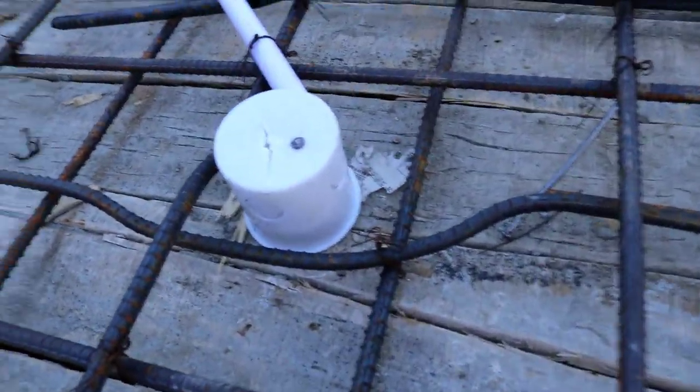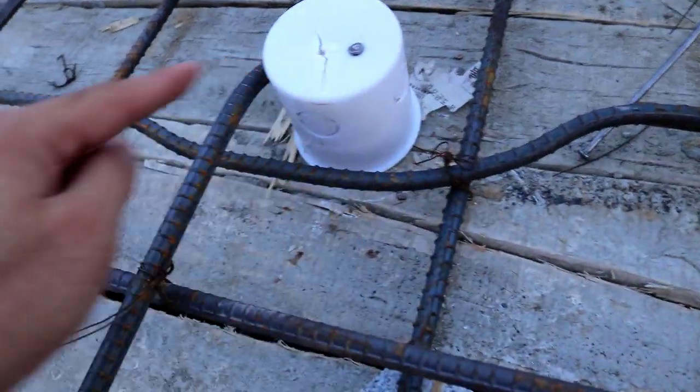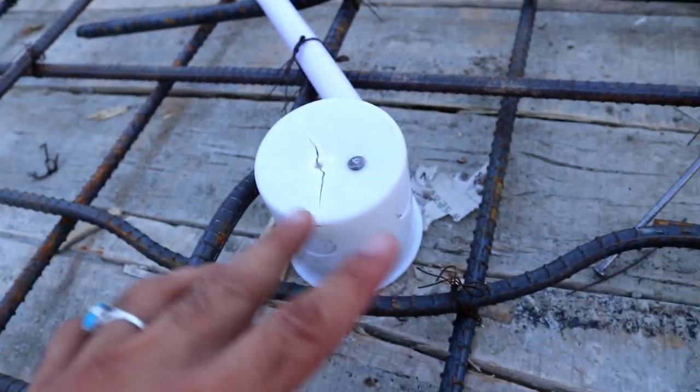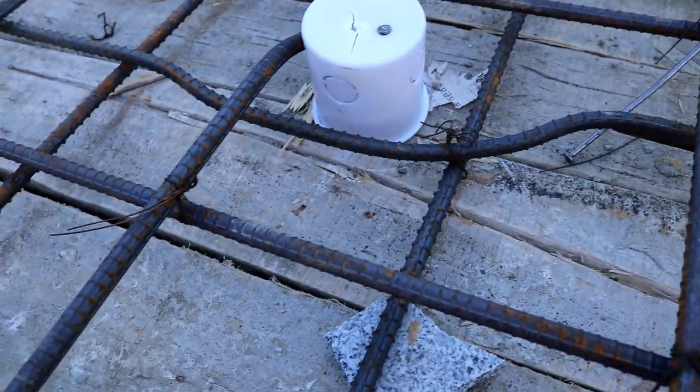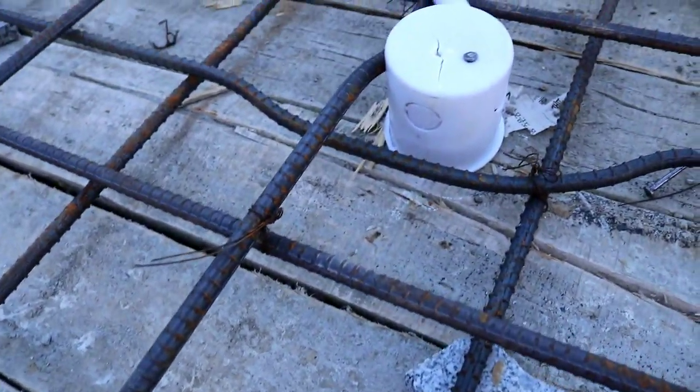Welcome back to Civil Engineers YouTube channel. As you can see, steel bars are bent near electrical pipes and circuits. What's the reason behind this?